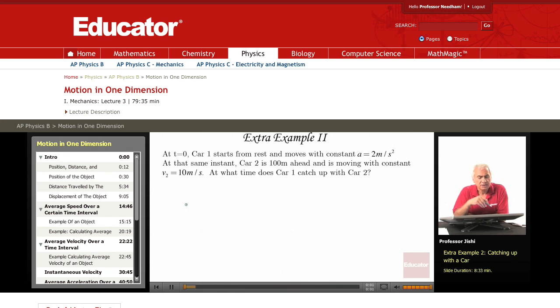Welcome. I'll discuss now extra example number 2. We're told that at t equals 0, car 1 starts from rest and moves with a constant acceleration of 2 meters per second square.